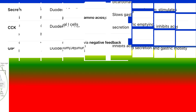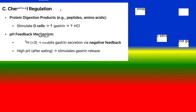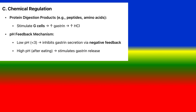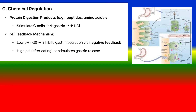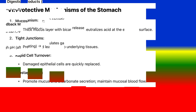C. Chemical regulation: Protein digestion products, such as peptides and amino acids, stimulate G cells to release gastrin and increase HCL secretion. pH feedback mechanism: low pH inhibits gastrin secretion, while high pH after eating stimulates gastrin release.